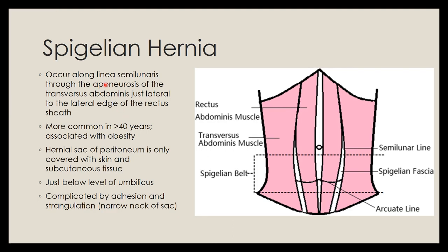Spigelian hernias occur along the linea semilunaris through the aponeurosis of the transversus abdominis, just lateral to the lateral edge of the rectus sheath. This area is covered by the Spigelian fascia and represents a potential site of weakness through which contents can protrude. These hernias are more common in patients over 40 who are obese, usually occur below the level of the umbilicus, and can be complicated.